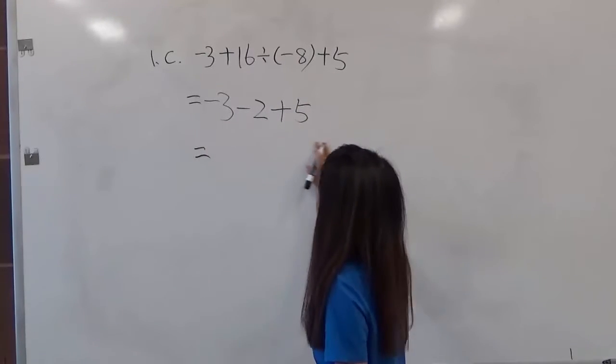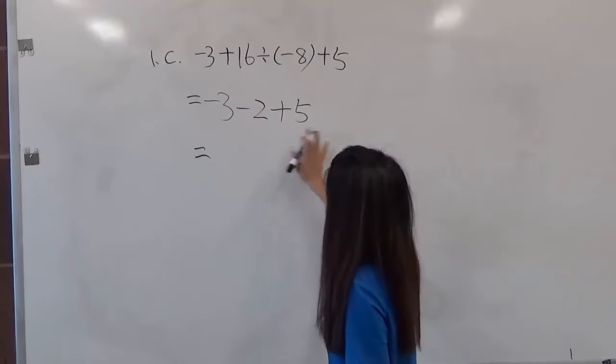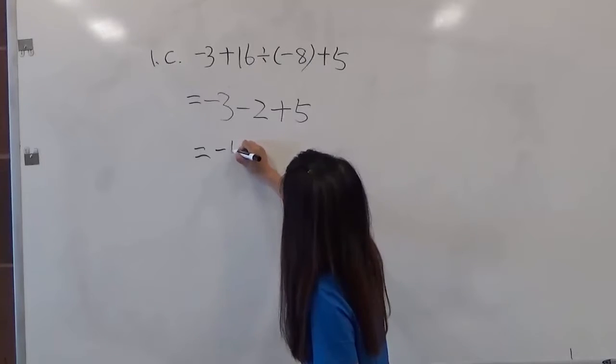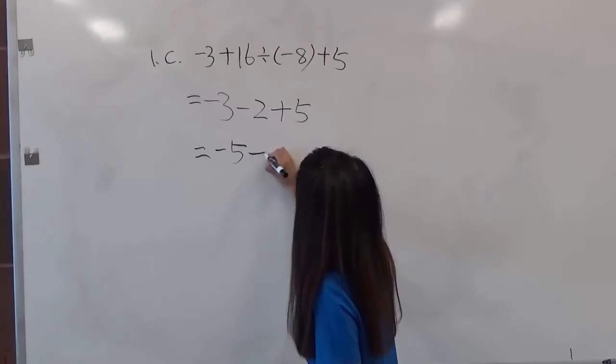Then by this step, we just need to calculate from left to right. So negative 3 minus 2 is negative 5 plus 5.